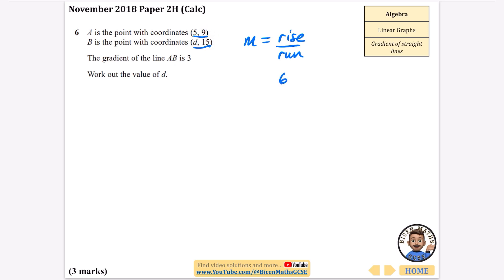If it's rising by 6 and the gradient is 3, we need to find how much it runs along. Well, 6 ÷ 2 = 3, so it has to run along 2 spaces. To go from x = 5 to d, it goes along 2, so d = 7. That's the intuitive approach — now I'll also do the algebraic one.